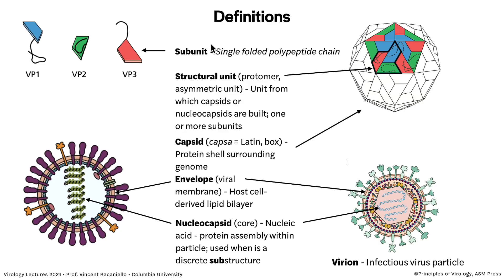The next level up is called a structural unit, which has synonyms including protomer and asymmetric unit. This is the unit from which virus particles — called capsids or even nucleocapsids — are built. It can be composed of one subunit repeated many times, or it could be multiple subunits. In this virus outlined in black, three subunits make up the structural unit.